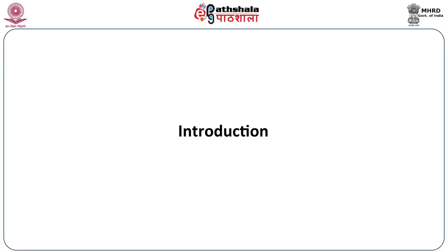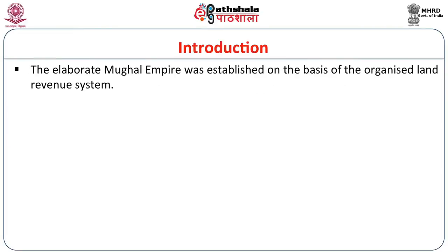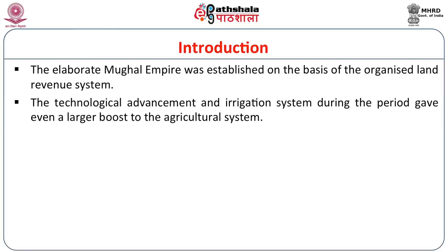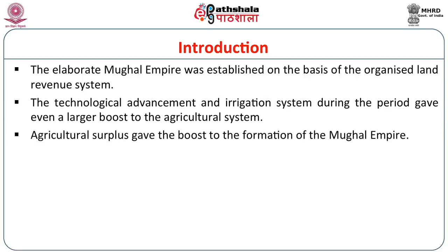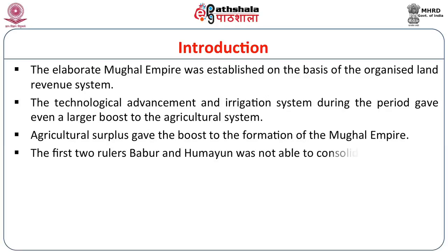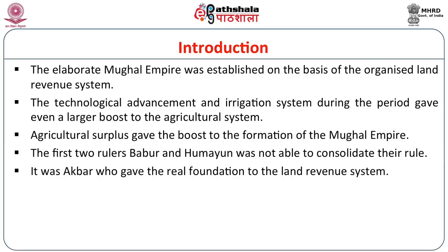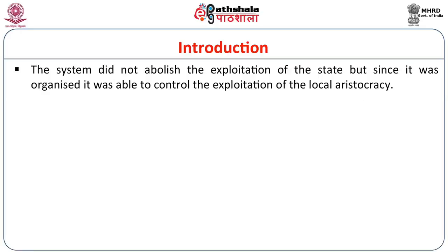The elaborate Mughal Empire was established on the basis of an organized land revenue system. The technological advancement and irrigation system during the period gave a large boost to the agricultural system. The agricultural surplus gave a boost to the formation of the Mughal Empire undoubtedly. The first two rulers, Babur and Humayun, were not able to consolidate their rule. It was Akbar who gave the real foundation to the land revenue system. The system did not abolish the exploitation of the state but since it was organized, it was able to control the exploitation of the local aristocracy to a large extent.